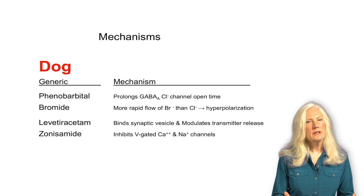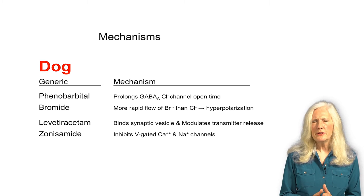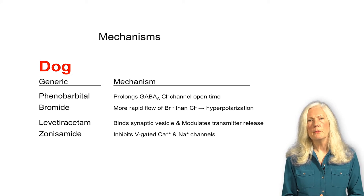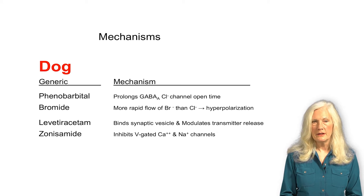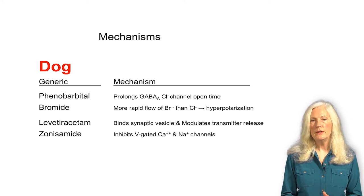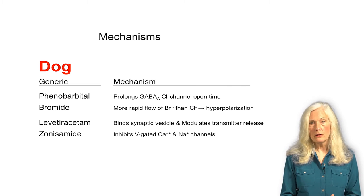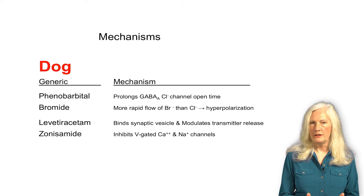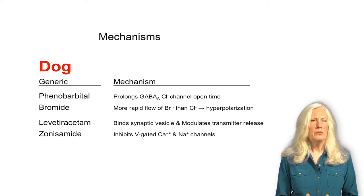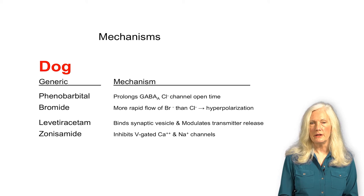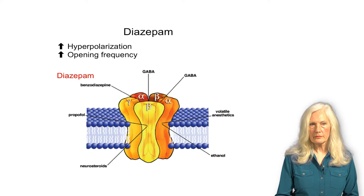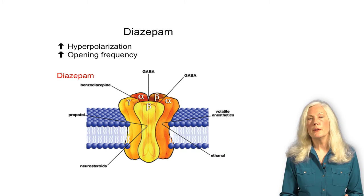When treating epilepsy, it's common to give several drugs to provide optimal control. The drugs used to control seizures vary in their mechanism of action. When drugs have different mechanisms to elicit the same effect, sometimes they produce a synergistic interaction when combined. Otherwise, drugs with an identical mechanism of action would be merely additive — just like giving more of the same drug. So the goal is to combine drugs with distinct mechanisms of action to optimize anticonvulsant activity and decrease the dose of each drug needed so that side effects are minimized.